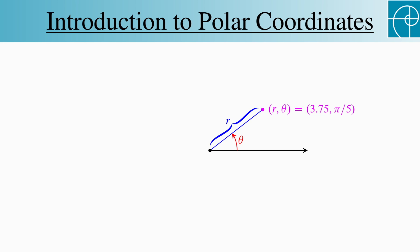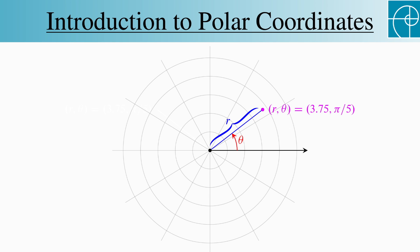The background grid for polar coordinates, what you could imagine being drawn on graph paper, is this. Let's note right away a significant difference between this system and rectangular coordinates.